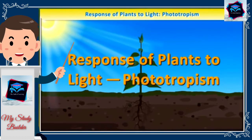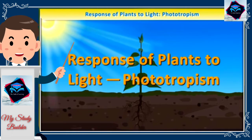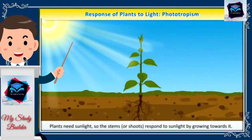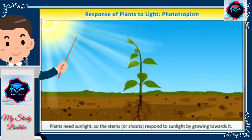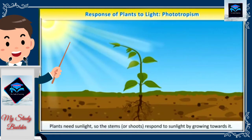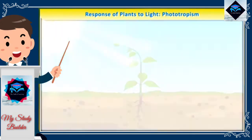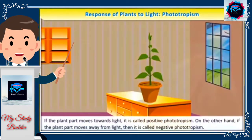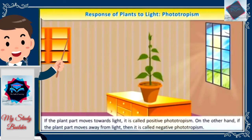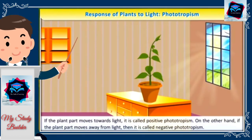Response of plants to light — phototropism. Plants need sunlight, so the stems or shoots respond to sunlight by growing towards it. If the plant part moves towards light, it is called positive phototropism.